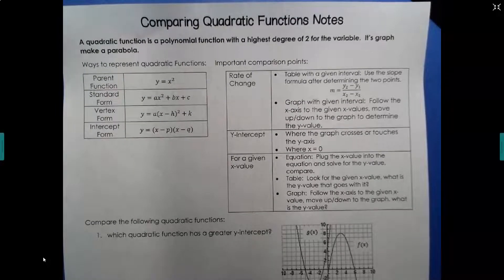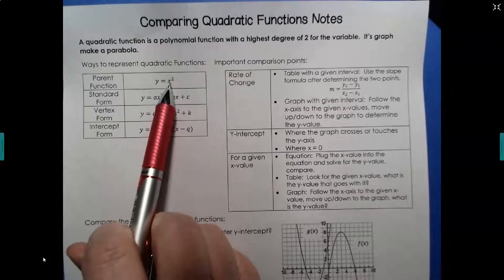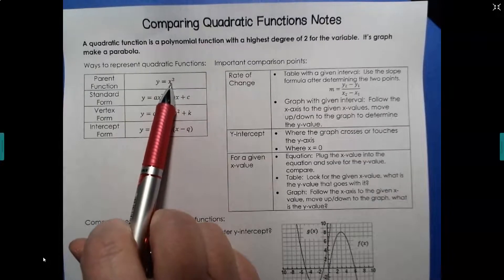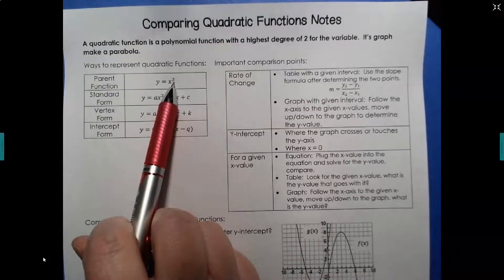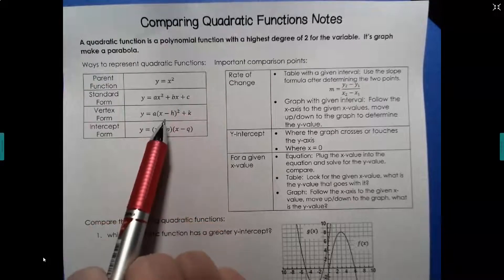A quadratic function is a polynomial function with the highest degree of 2 for the variable. Its graph makes a parabola. When we were comparing functions, we talked about how to identify whether a function was linear, quadratic, or exponential. Quadratic functions all have a degree of 2 — degree being the highest exponent. So here is our parent graph, the most basic quadratic.